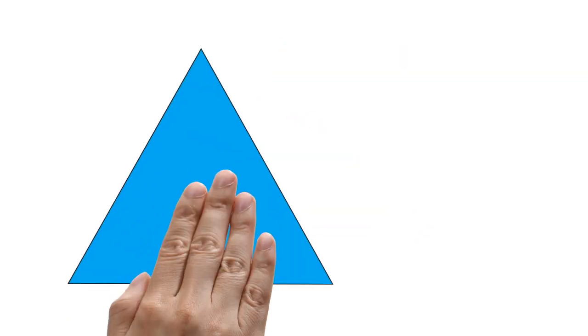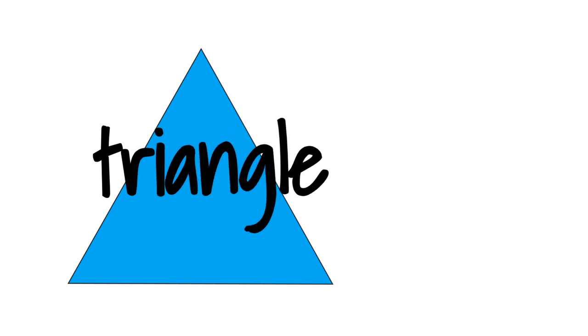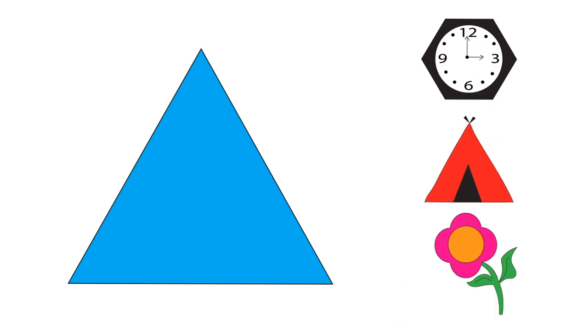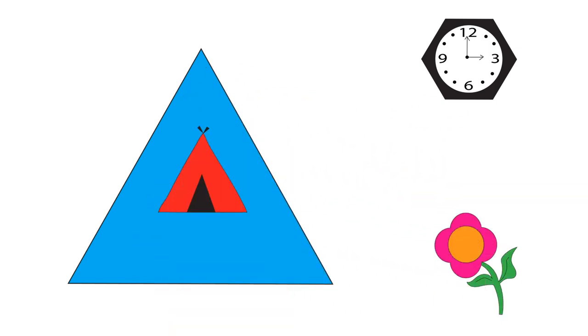This is a triangle. Can you see an object that is shaped like a triangle? A tent is shaped like a triangle. Triangle.